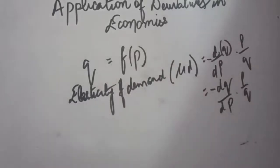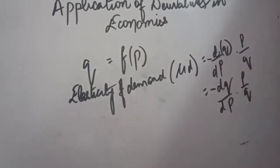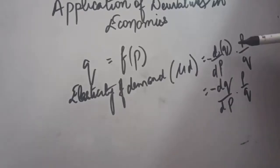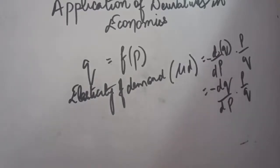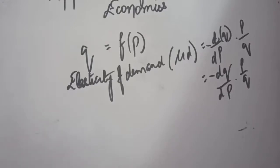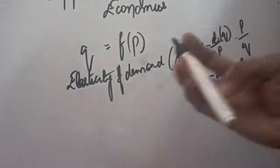So elasticity of demand is the derivative of q with respect to p, multiplied by price divided by quantity. In fact, elasticity of demand is the percentage change in quantity demanded due to percentage change in price — the proportion between quantity demanded and price, accounting for their changes. This is the formula for calculation of elasticity of demand.